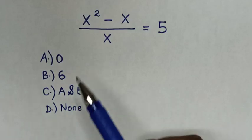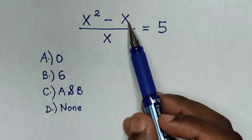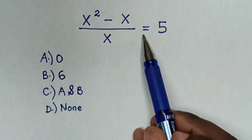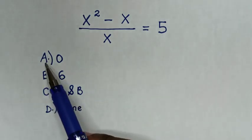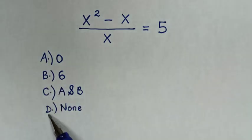Hello, how to solve x squared minus x over x is equal to 5, by selecting the answers in A, B, C, or D.